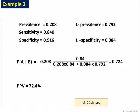Knowing the a priori prevalence of the disease, 20.8%, the sensitivity of the test, 84%, and its specificity, 91.6%, we can deduce the probability of being ill if the test is positive, which is 72.4%. In diagnosis, this probability is called the positive predictive value of the test. I suggest you take a look at the video called Screening to get more information on the subject.